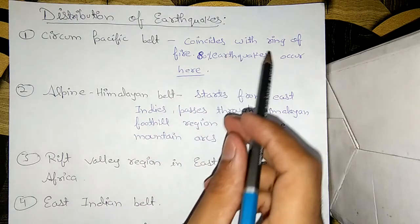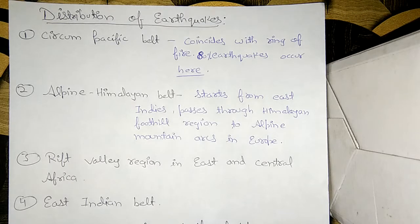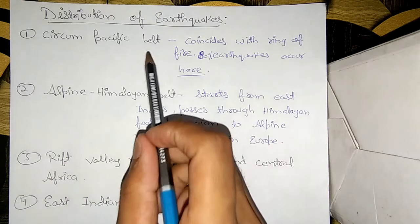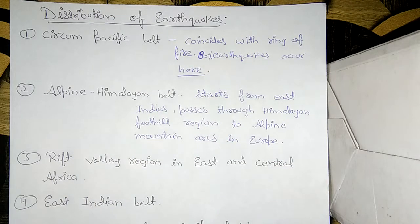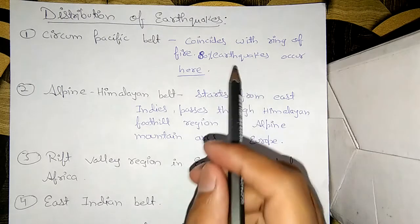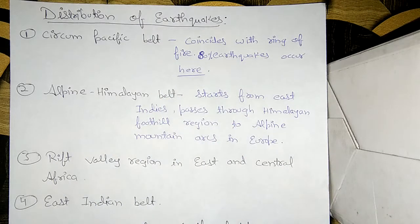This belt coincides with the Ring of Fire — which we discussed in the topic on volcanoes — the region where most volcanic activity on Earth currently occurs. The Circum Pacific Belt coincides with the Ring of Fire in the Pacific Ocean, and 80 percent of all earthquakes on Earth occur here.